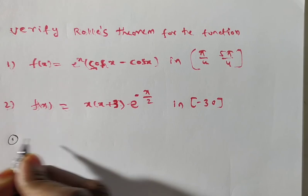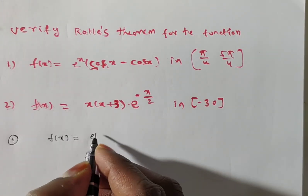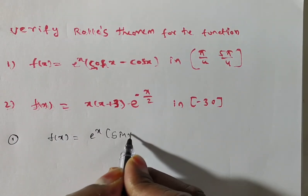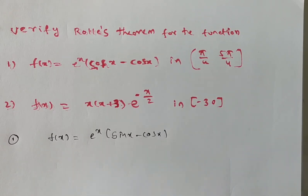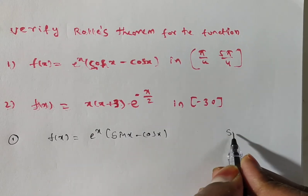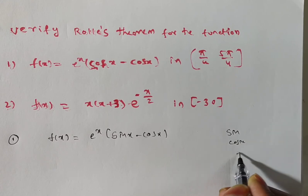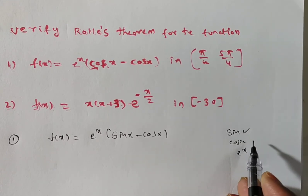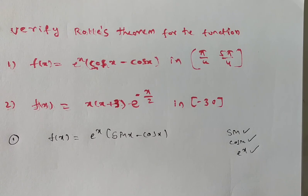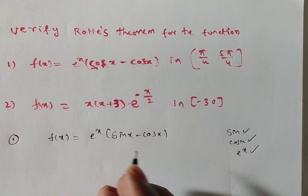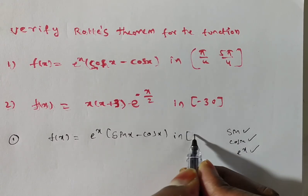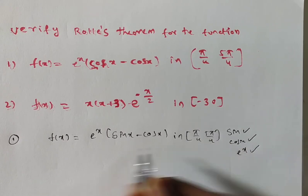Coming to the first problem, f(x) = eˣ · (sin x − cos x). The given function contains sin, cosine, and exponential functions. Sin is continuous, cosine is continuous, and eˣ is also continuous, so their combination is also continuous. Therefore f(x) is continuous everywhere, and in particular on [π/4, 5π/4].